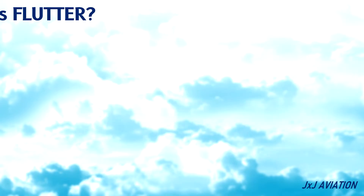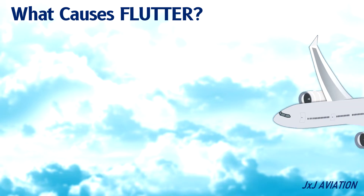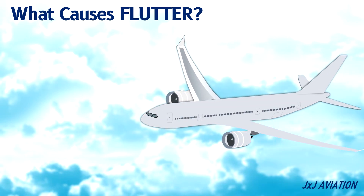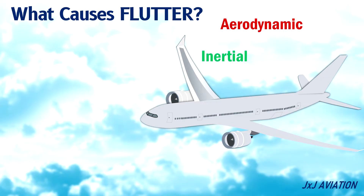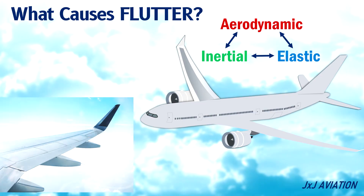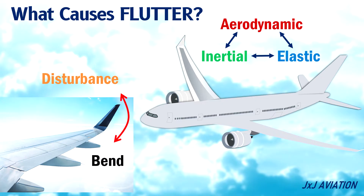What causes flutter? Flutter occurs because of an interaction between aerodynamic, inertial, and elastic forces. When an aircraft is in flight, if there is a disturbance to the airflow across the wing, the wing will bend. This could result in vibrations, which may increase if not damped properly.